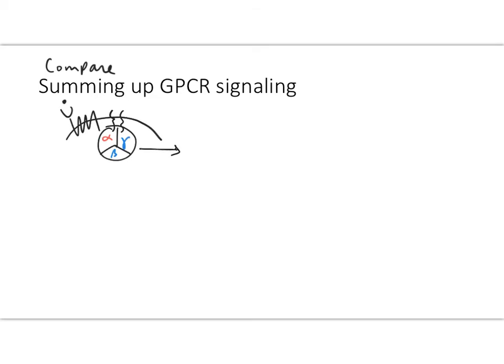When activated in skeletal muscle cells, we followed G alpha, which activated adenylyl cyclase and eventually activated PKA, which eventually led to glycogen breakdown. I'm leaving out some of the other steps you've seen before as a way to compare these.